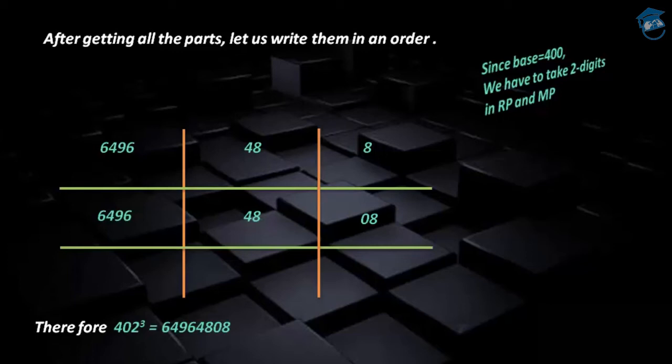This is the way how we can use Yavadunam Sutra in finding the cube of a given number which is very near to the base 400. I hope that you have understood pretty well what I have explained in this session. In the next session, we are going to have some more examples on the same concept. Thank you, have a nice day.